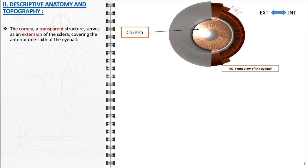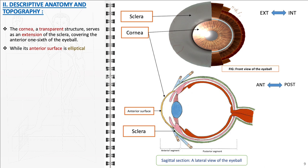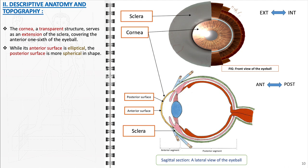Let's delve into the anatomical characteristics of the cornea. As a clear, transparent extension of the sclera, the cornea plays a pivotal role in vision by covering the anterior one-sixth of the eyeball. The cornea's distinct shapes, elliptical on its anterior surface and more spherical on the posterior, are essential for its optical functions.